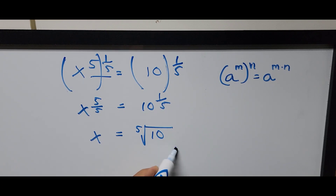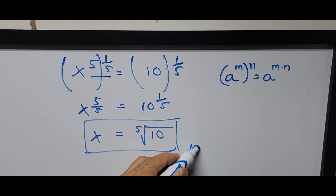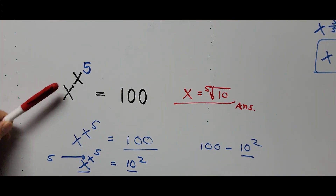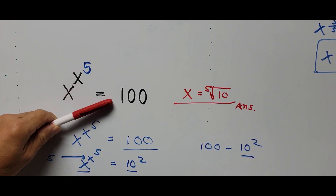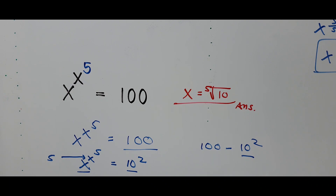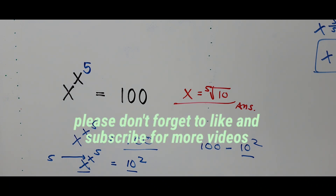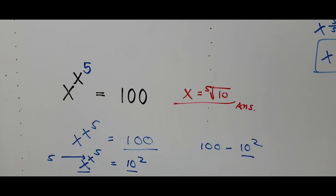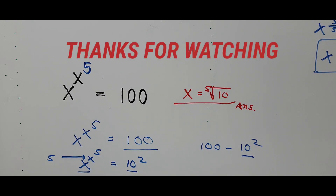That's the value of x — that's the final answer. For the exponential equation x to the power of x to the power of 5 equals 100, the value of x is the fifth root of 10. For those new to my channel and those who have not subscribed, please don't forget to like and subscribe for more videos. Thank you for your time, thank you for watching — have a great day everyone, see you in the next video, bye!